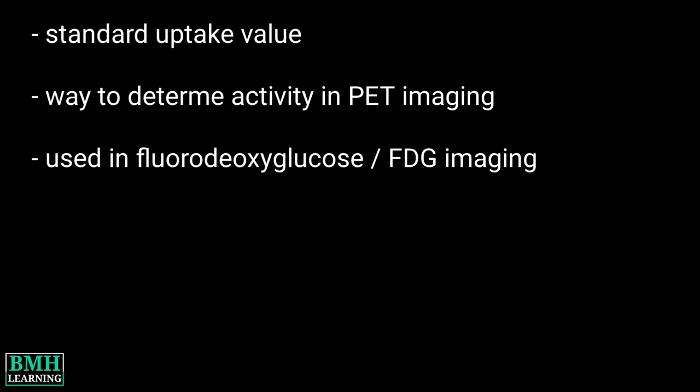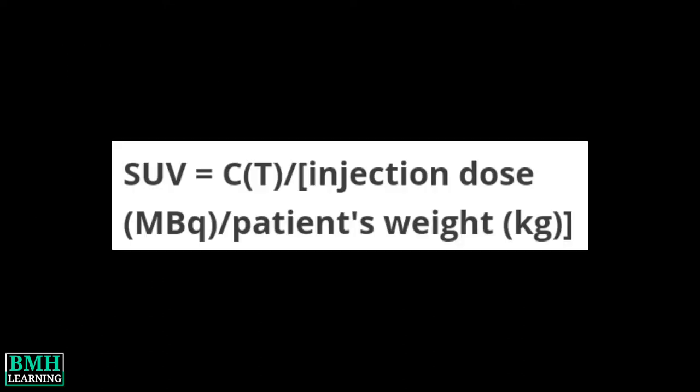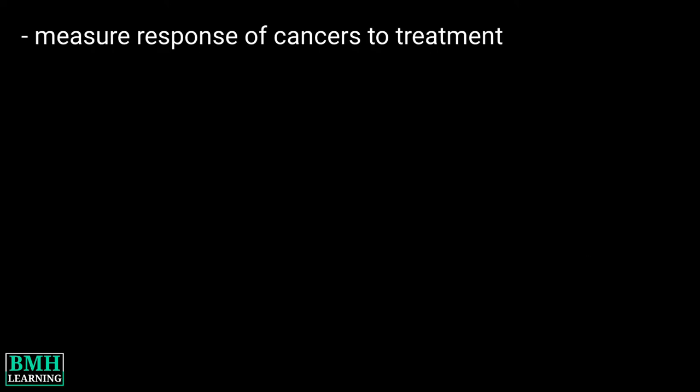SUV is also known as the dose uptake ratio. As given in the formula, it is a mathematically derived ratio of tissue radioactivity concentration at a point in time, represented by CT, and the injected dose of radioactivity per kilogram of the patient's body weight. It is used to measure the response of cancers to treatment.